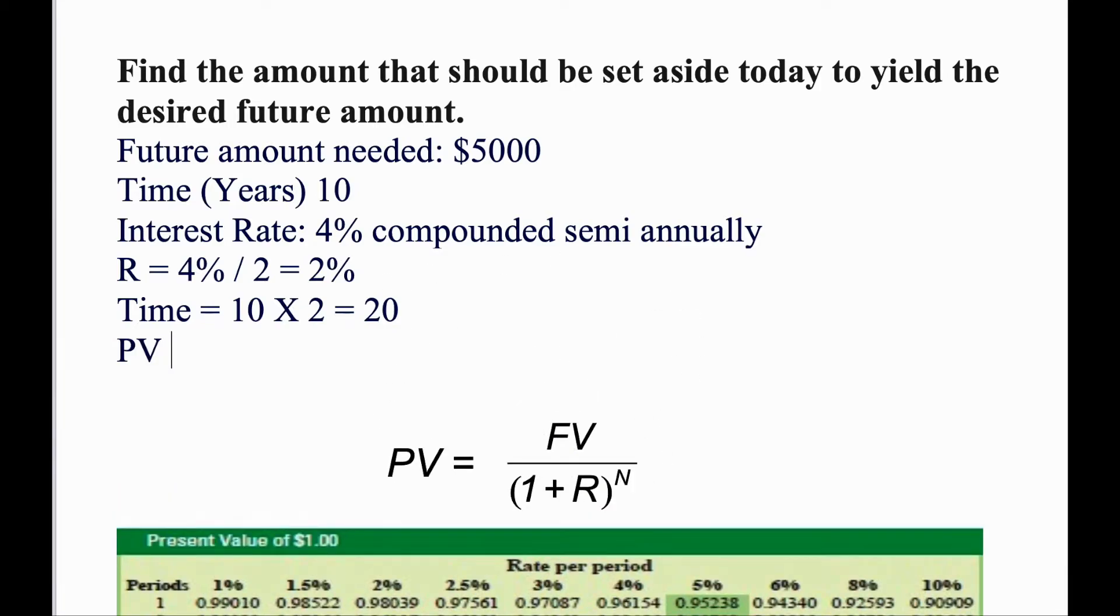So the formula for present value equals 5,000 divided by 1 plus r, which is 2%. So instead of 2%, we're going to put 0.02. 2% divided by 100% equals to 0.02 raised to the power of 20.